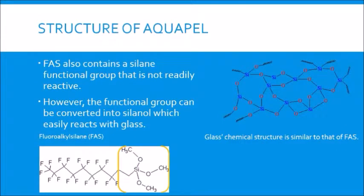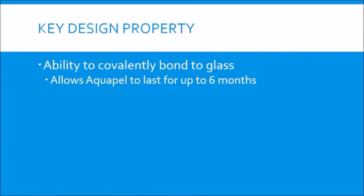Moving on, FAS also contains a silane functional group that cannot react with the glass in its current form. However, this can be made into a more reactive chemical by the transformation of the silane functional group into silanol. Glass has a similar structure to FAS's silane functional group, as they both contain silicon-oxygen bonds. The key design property of Aquapel is the ability of FAS to covalently bond with the glass when the silane functional group is converted into silanol.